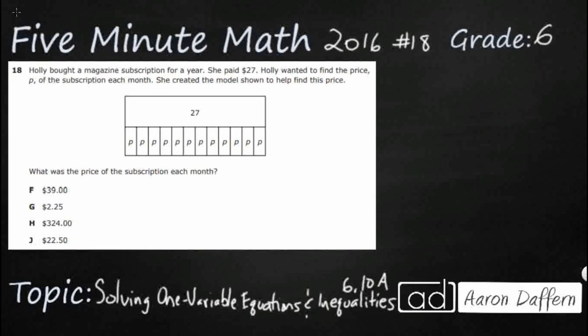So we have Holly — she bought a magazine subscription for $27 for the year, and they have already started to put that into a strip diagram for us, so that is pretty nice. She wants to find the price P of each month. Even if you cannot remember there are 12 months in a year, they drew that out for you — 12 different P's, one representing each month.